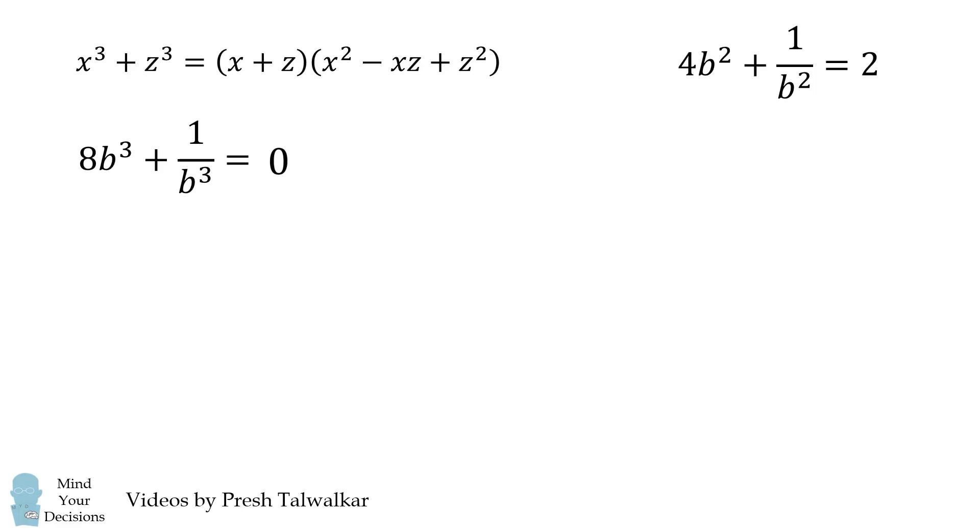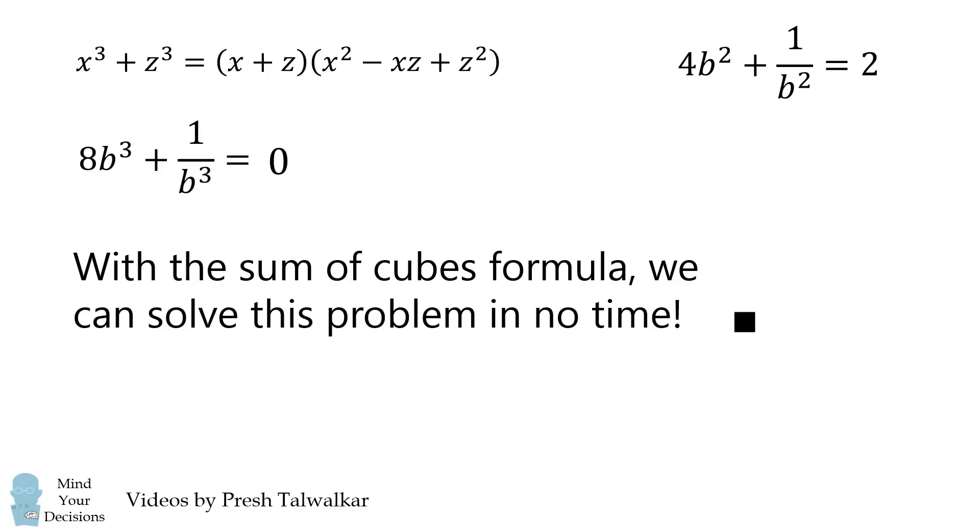And that's our answer. 8b cubed plus 1 over b cubed is equal to 0. With the sum of cubes formula we can solve this problem in no time at all. Incredible!